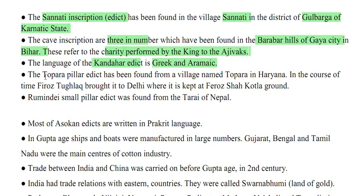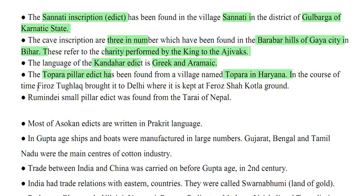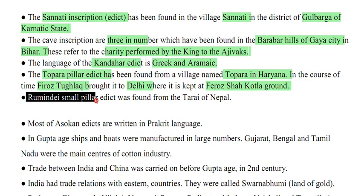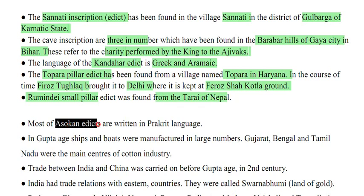The Topra pillar edict was found from the village Topra in Haryana; Firoz Tughlaq later brought it to Delhi where it is kept at Firoz Shah Kotla. Rumindai's small pillar edict was found from the Tarai of Nepal. Most of Ashoka's edicts are written in Prakrit language.